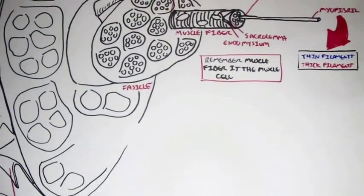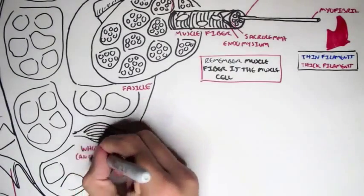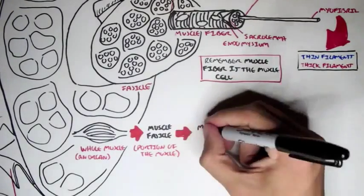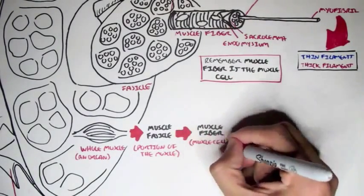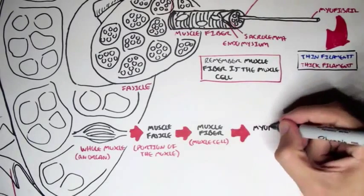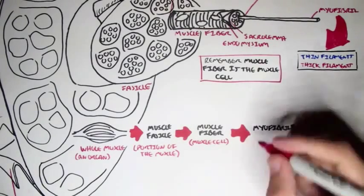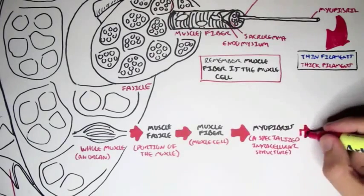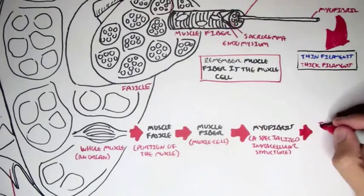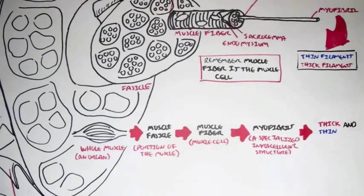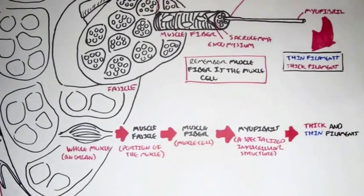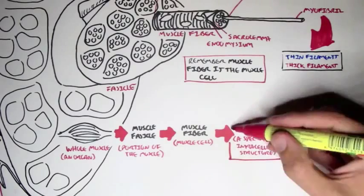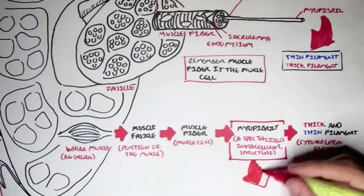Let's recap. Starting with a whole muscle as an organ, a portion of that is the muscle fascicle. The muscle fascicle contains many muscle fibers, the actual muscle cells. The muscle fiber, the muscle cell, contains many internal structures — the myofibrils, which are specialized intracellular structures. The muscle fiber contains many myofibrils, and the myofibrils are the ones that contain thick and thin filaments, also known as the cytoskeleton elements.